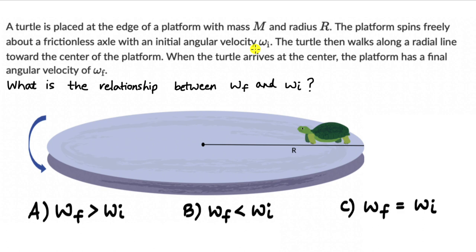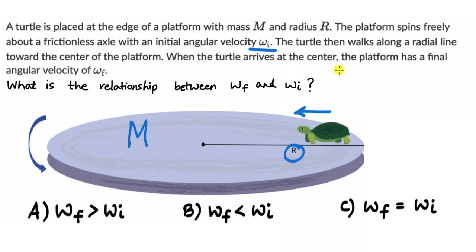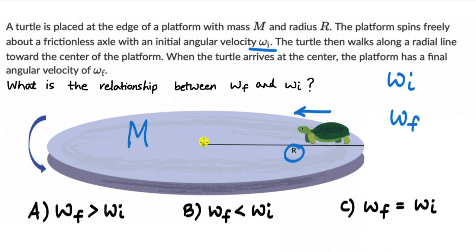Let's look at one more question. Here we have a turtle placed at the edge of a platform with mass M and radius R. The platform spins freely about a frictionless axle with an initial angular velocity of ω_i. The turtle then walks along a radial line toward the center of the platform. When the turtle arrives at the center, the platform has a final angular velocity of ω_f. The question is to figure out the relationship between ω_f and ω_i.